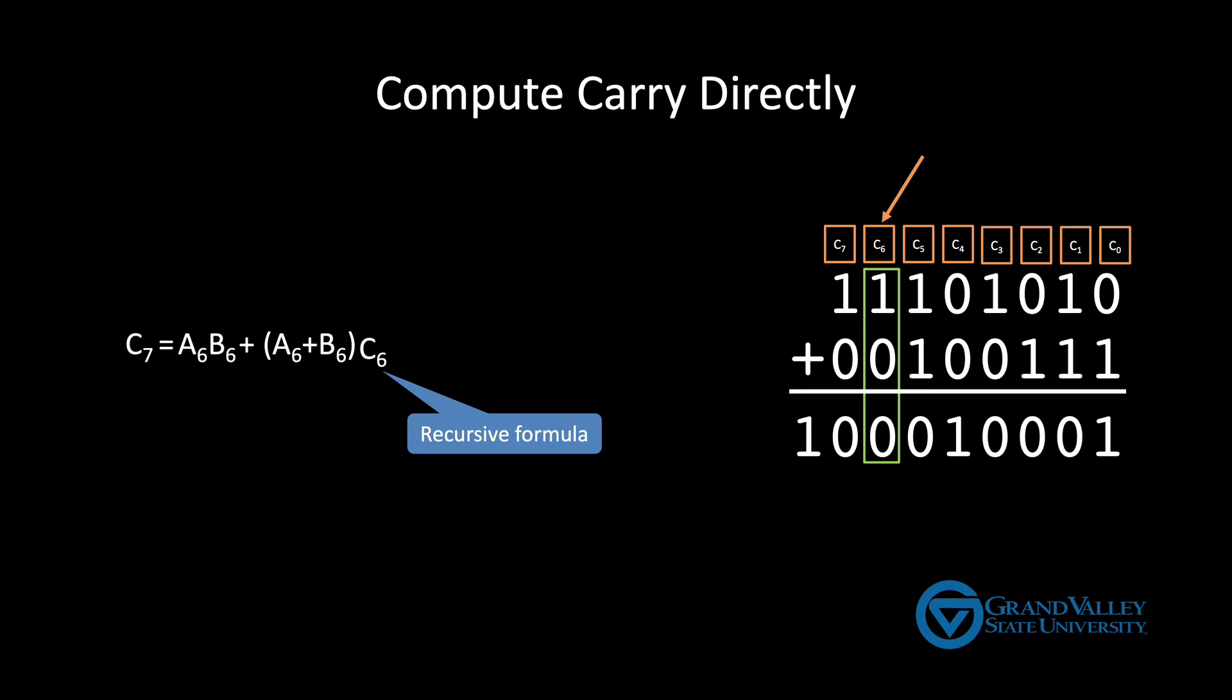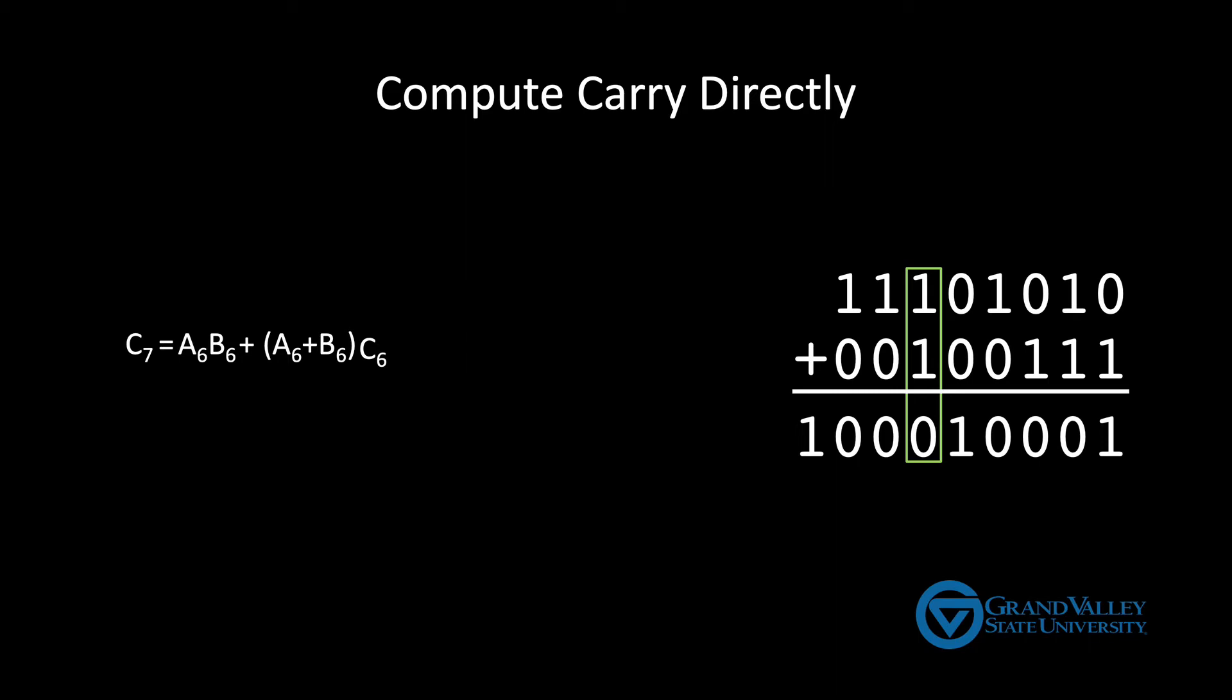Alright, to more easily understand this formula, both the recursive version here and the non-recursive version we're going to build, let's classify the columns into three groups. If both inputs in a column are ones, we say that that column generates a carry. We say it generates a carry because there will always be a carry out of this column. So, in some sense, columns like this create or generate a new carry. If a column has a single one, we say that that column propagates the carry. It doesn't generate or create a new carry, but if there's a carry into the column, the column will pass it on or propagate it into the next column.